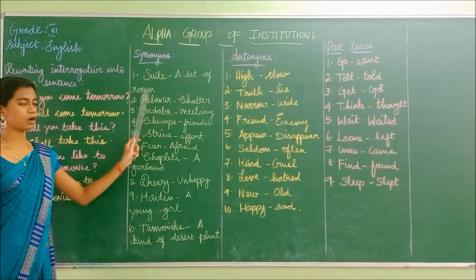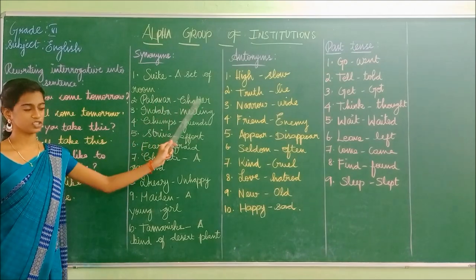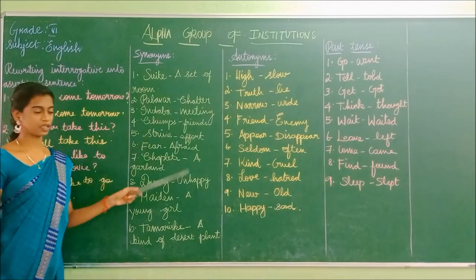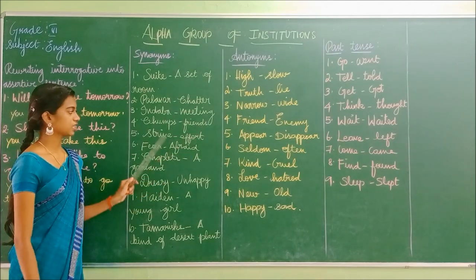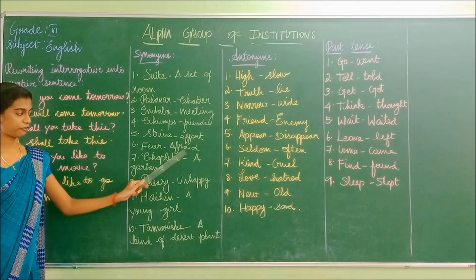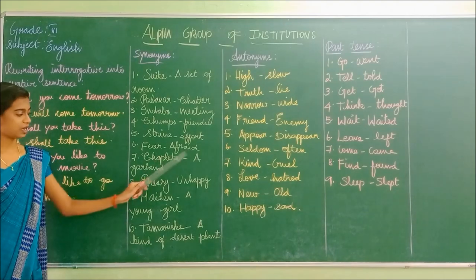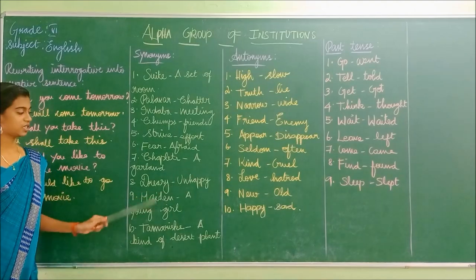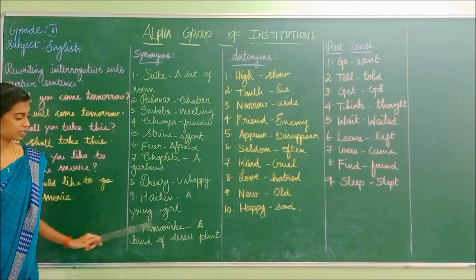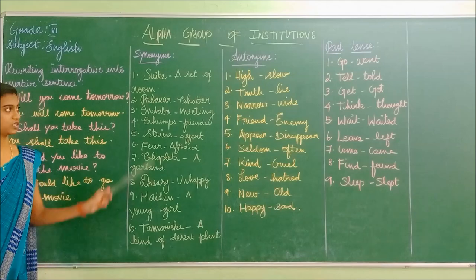Now the synonyms: Suit — a set of rooms. Parlour — charter. Indaba — meeting. Chants — friends. Strife — effort. Fear — affright. Chaplet — a garland. Dreary — unhappy. Maiden — a young girl. Tamarisk — a kind of desert plant.